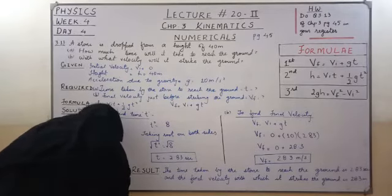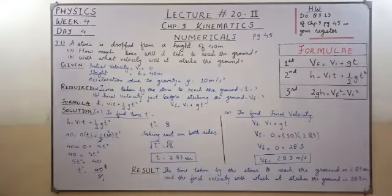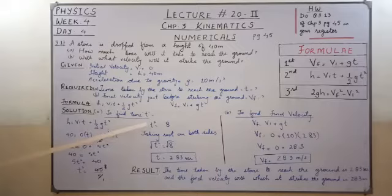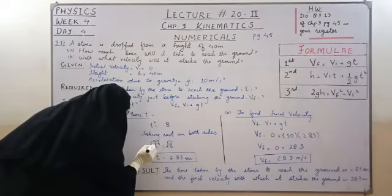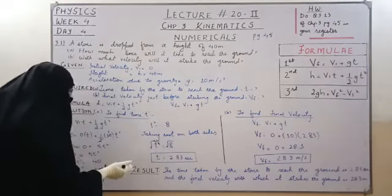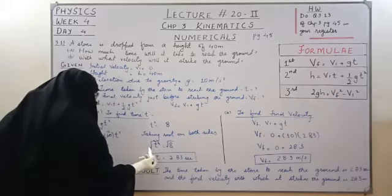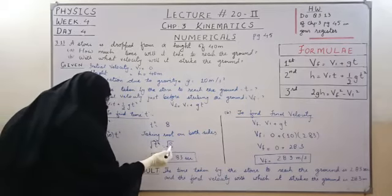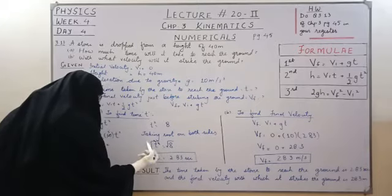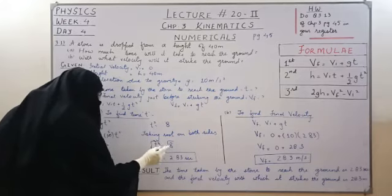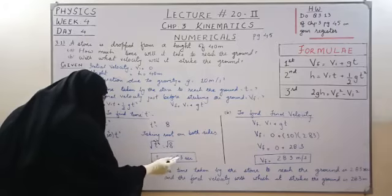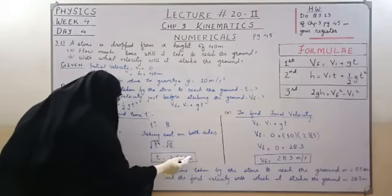8 equals t square. Now if t square is there and you have to remove the square, take root on both sides. This root cancels this square. And when you take the root of 8, it becomes 2.83 seconds. So time becomes 2.83 seconds.